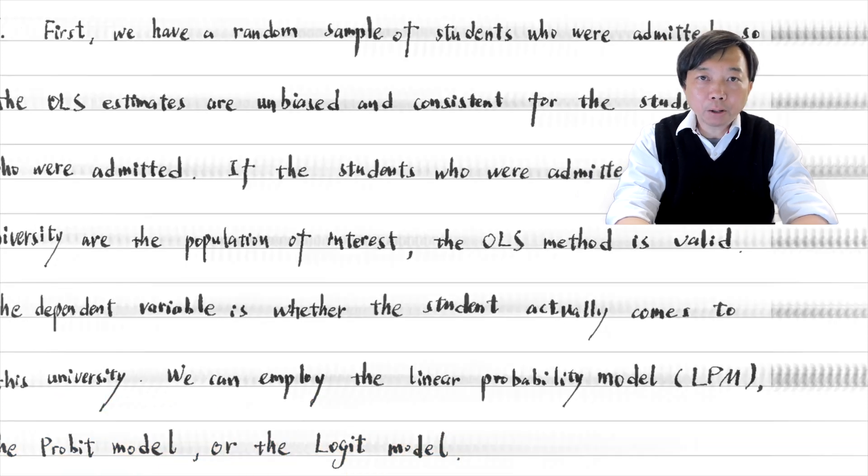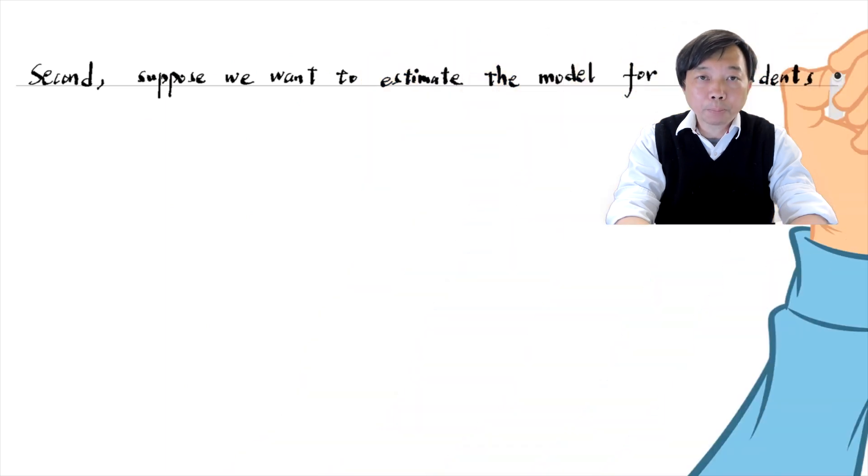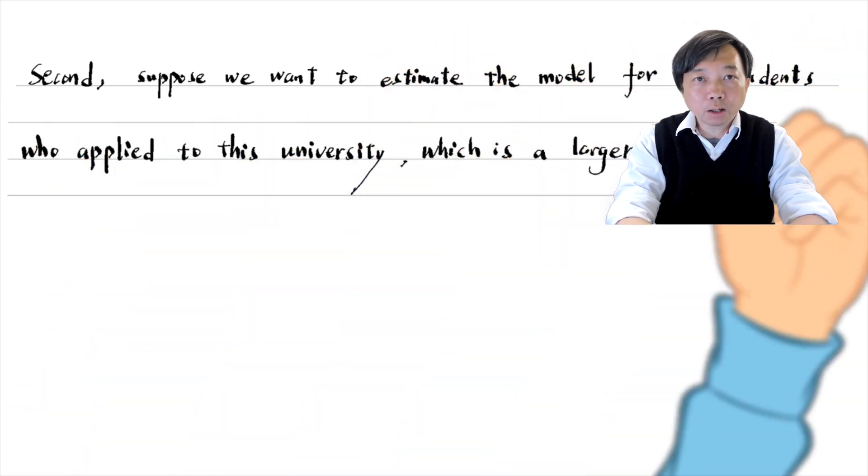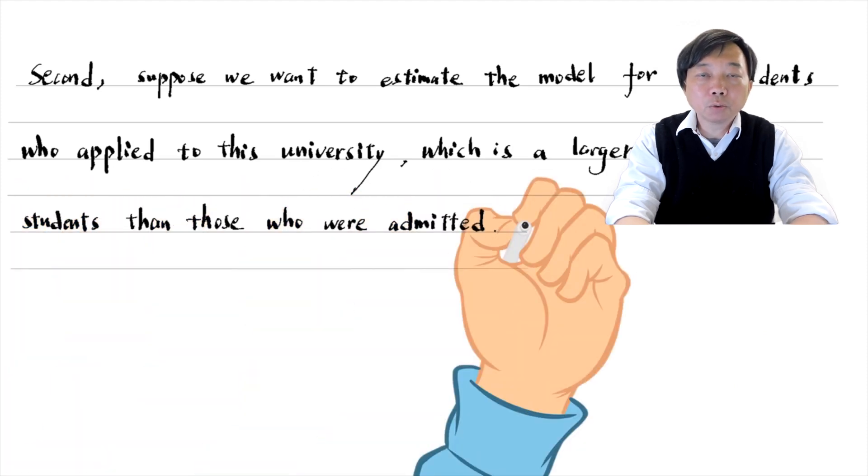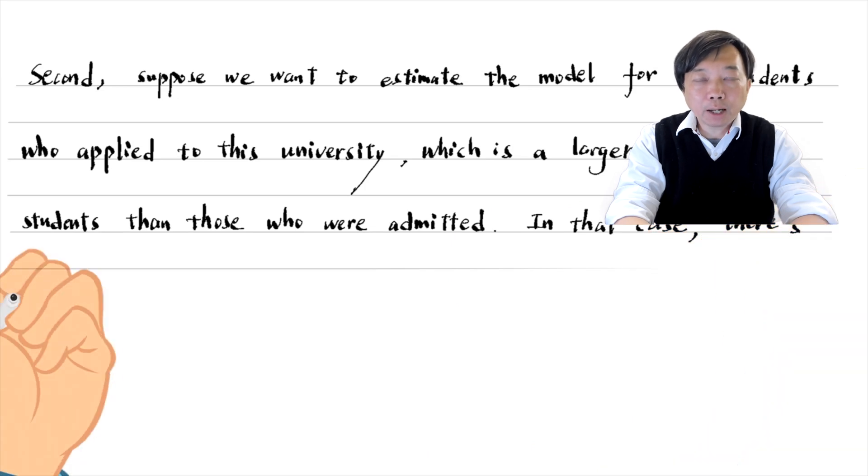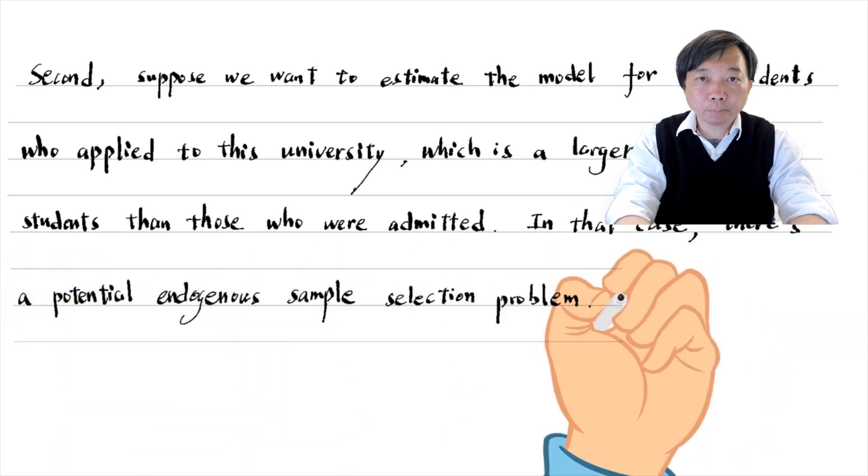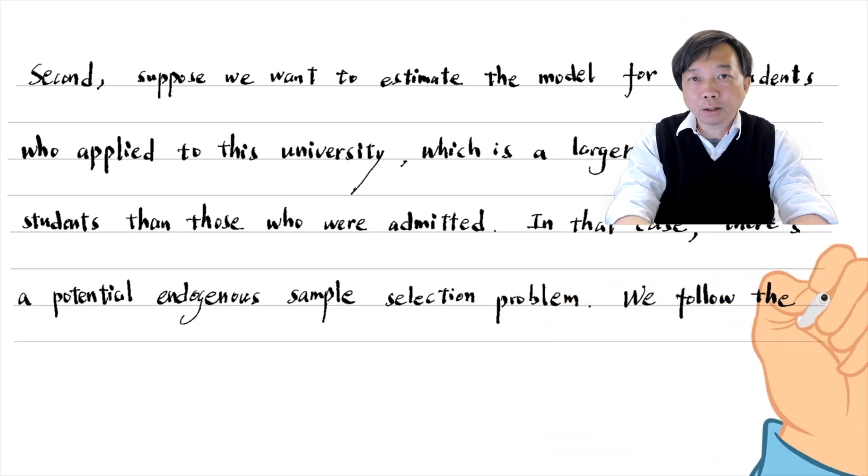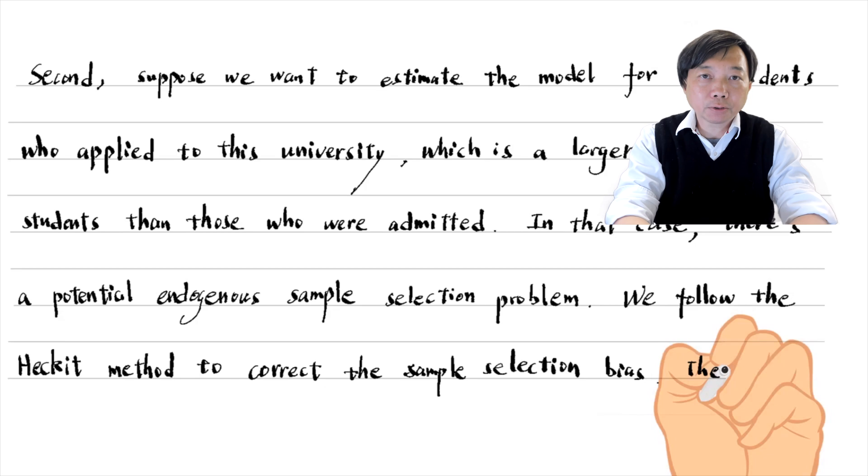Second, suppose we want to estimate the model for all students who apply to this university, which is a larger group of students than those who were admitted. In that case, there is a potential endogenous sample selection problem. We should follow the Heckman method to correct the sample selection. In the first step, we estimate the selection equation of admission using all students who apply to this university. Estimate a probit model of admission on all the exogenous variables that affect admission. Compute the probability of admission or the inverse Mills ratio.